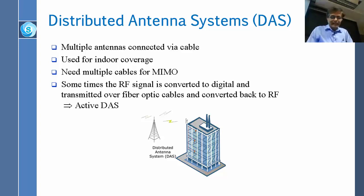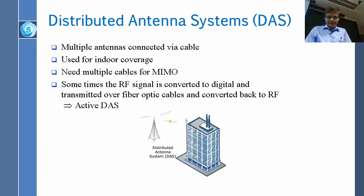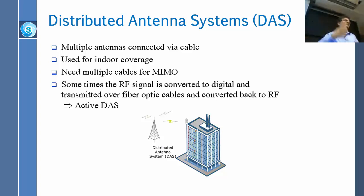With distributed antennas, the RF signal can be brought down as-is or converted to digital. In older systems like 3G, if you lived on a high floor you were simply out of luck with signal coverage. DAS essentially tries to cover everybody regardless of their floor or location within the building.